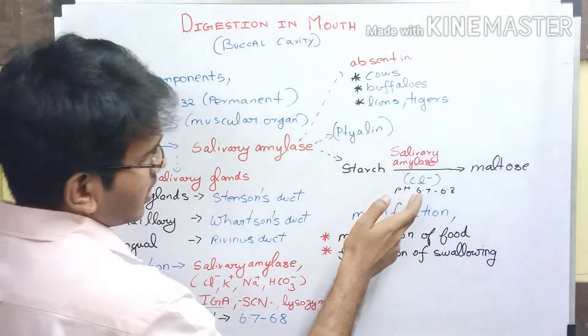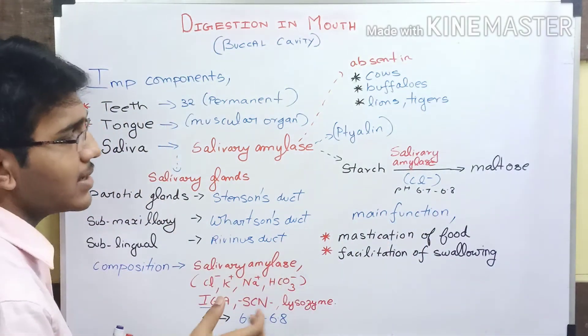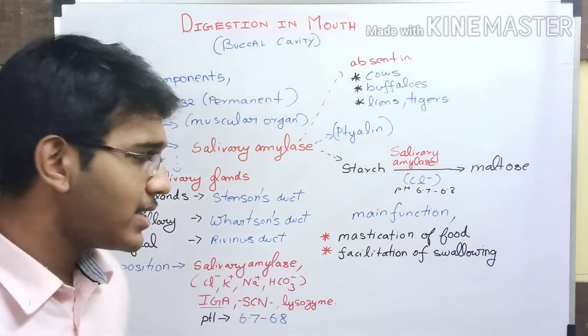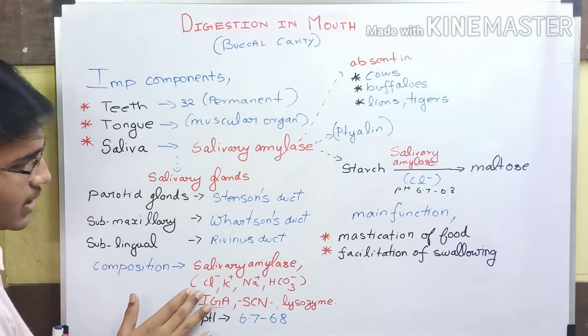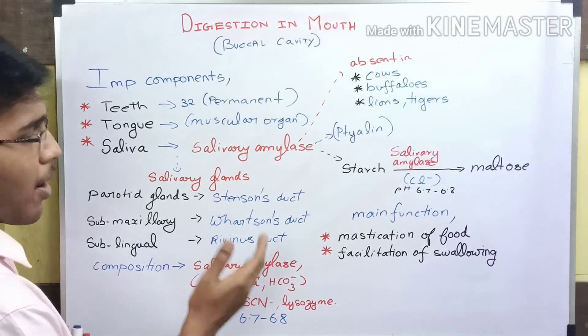The optimum pH of 6.7 to 6.8 for salivary amylase is maintained with the help of buffer systems managed by the ions present in saliva, for example chlorine, potassium, sodium, and bicarbonate ion.